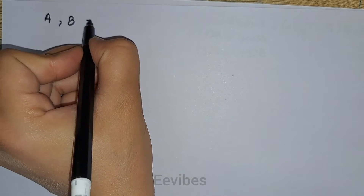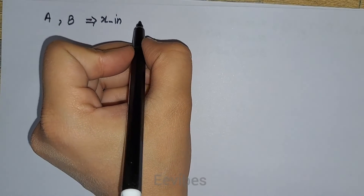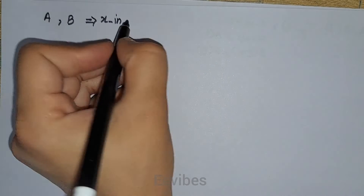Hi everyone, this is Asma Mushtaq from the Double-E Wipes. In this tutorial we are going to solve problem 5.16 from the Morris Mano textbook. In this problem you have to design a sequential circuit which contains two flip-flops named flip-flop A and flip-flop B, and there is one input denoted by x.